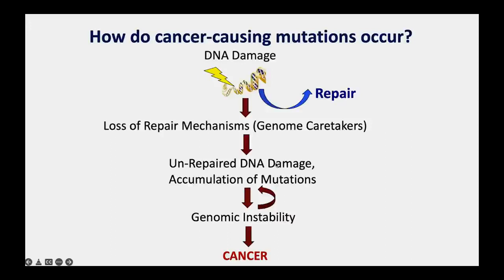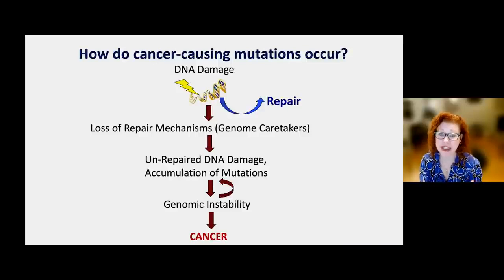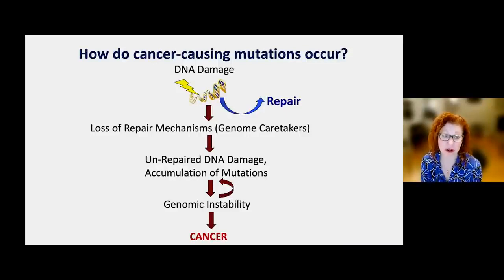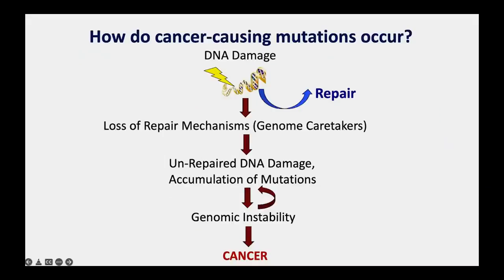The vast majority of our genome is non-coding—only 2% of the genome encodes genes, while 98% is doing other things like regulating gene expression. It can absorb some DNA damage without causing problems. But the more damage accumulates, the greater the likelihood that cancer-causing gene mutations result.